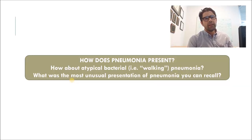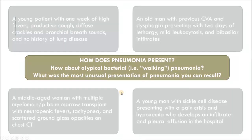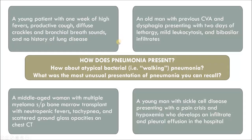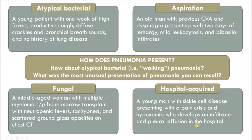What was the most unusual presentation of pneumonia you can recall? We all have highly memorable cases that shape how we think about diseases — like the fanciest restaurant we've ever visited. All these patients probably have pneumonia but are very different: a young patient with one week of high fevers and productive cough with diffuse crackles; an old man with previous CVA and dysphagia now with lethargy, leukocytosis, and bi-basal infiltrates; a middle-aged woman with multiple myeloma post-bone marrow transplant with neutropenic fevers, tachypnea, and ground glass opacities on CT; and a young man with sickle cell disease presenting with a pain crisis and hypoxemia who develops an infiltrate and pleural effusion in the hospital. These are all pneumonia, but each fits a different subtype with a more specific illness script.